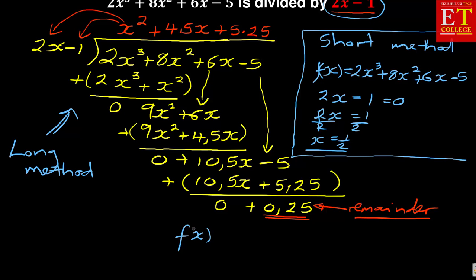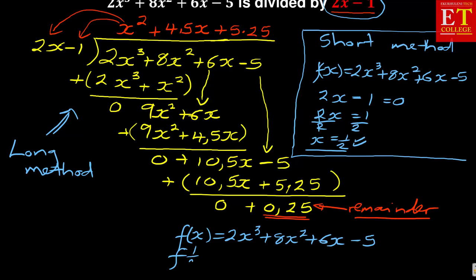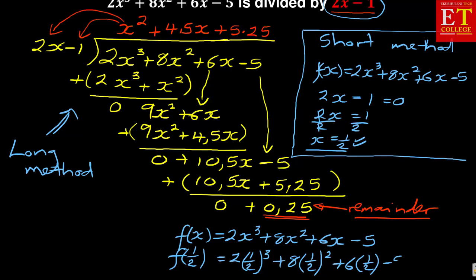My f of x was 2x cubed plus 8x squared plus 6x minus 5. Now where there is x, we're going to put the value x equals one half. So we're going to have f of 1 over 2 equals 2 times (1 over 2) cubed, plus 8 times (1 over 2) squared, plus 6 times (1 over 2), minus 5. And then I'm going to take my calculator and punch that.